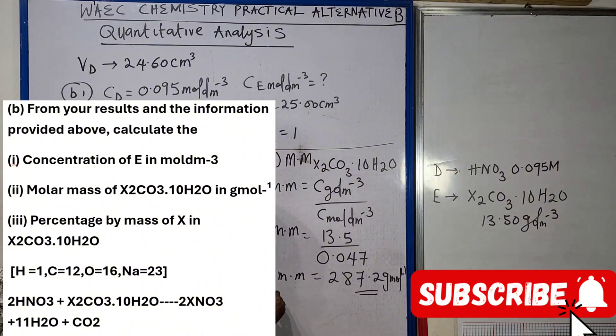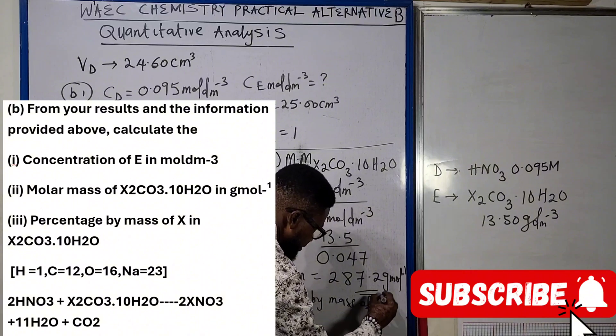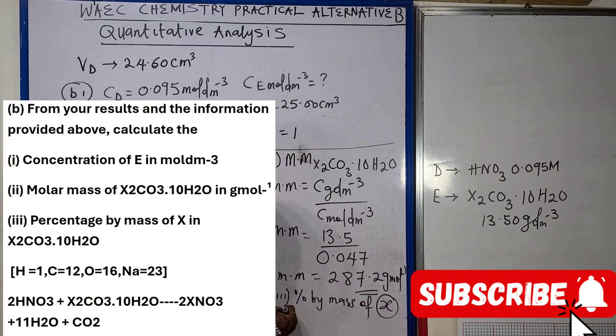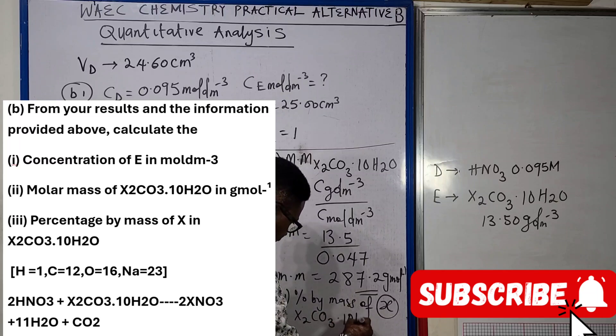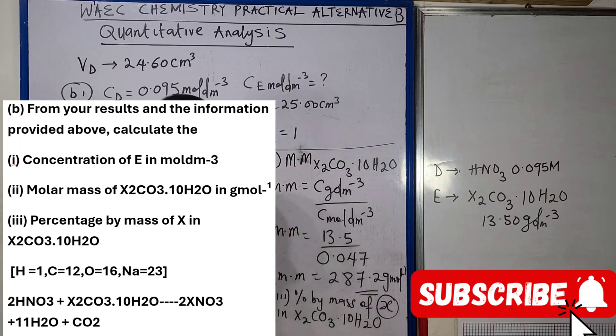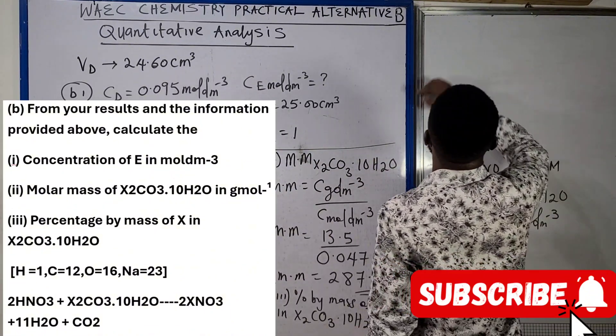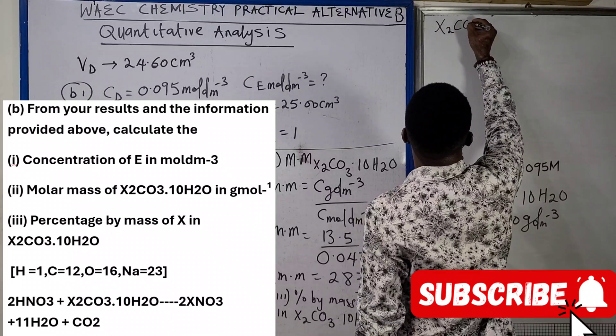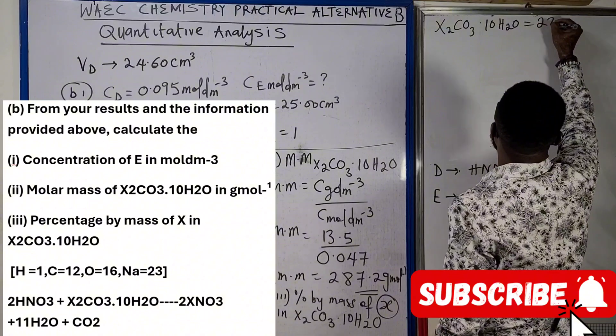We've been able to get that. If you look at the next question, B3, we're going to look for the percentage by mass of X in X₂CO₃·10H₂O. This looks pretty direct if you look at it. Na₂CO₃·10H₂O is actually equals to 287.2.